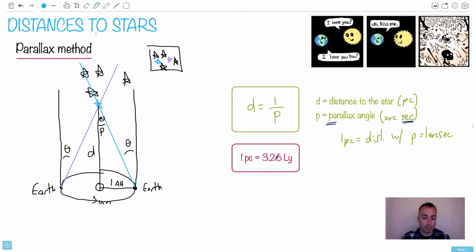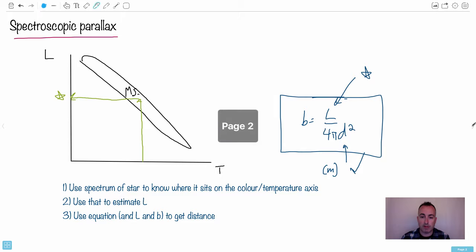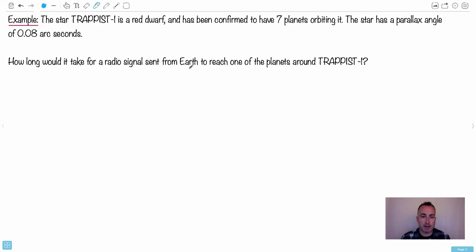So d is one over p, where the parallax angle has to be in arc seconds and the distance is in parsecs. And remember there's 3.26 light years in a parsec. These are on your data booklets. You don't have to memorize them. So if we do that then we can just say it's really easy then. Let's write down the equation that we use. So d is one over p. Therefore the distance is going to be one over the parallax angle which is 0.08. 1 over 0.08, I get an answer of 12.5. What are the units though? It's measured in parsec.